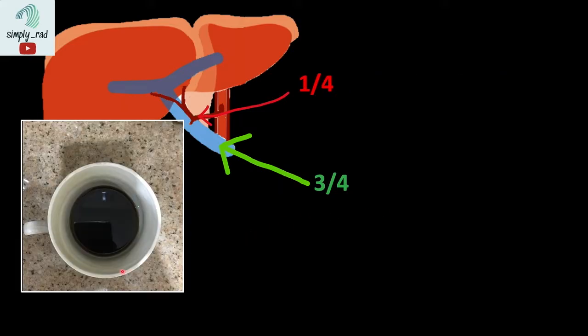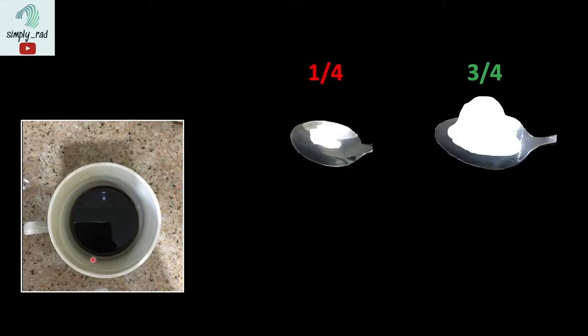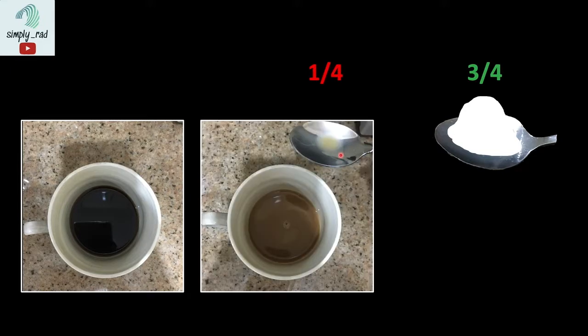Imagine this black coffee as the unenhanced liver. To make it enhanced, we will put creamer into it. First, we add a small amount of creamer to represent one-fourth of blood supplied by the hepatic artery. You can see that the coffee brightened a bit compared to the black coffee.